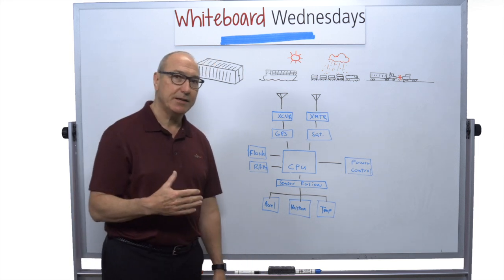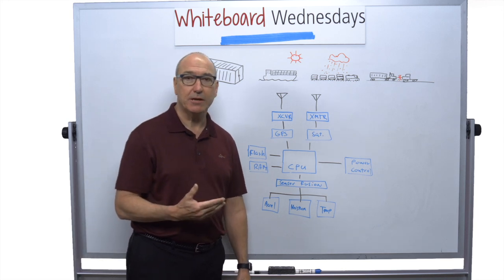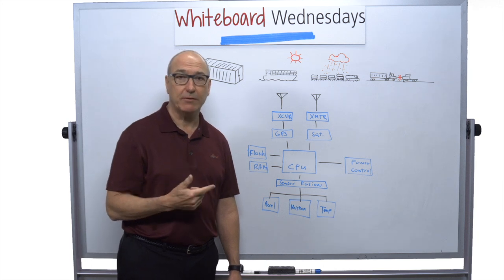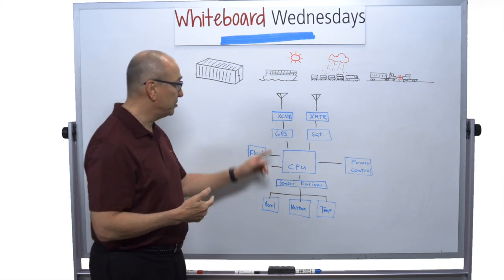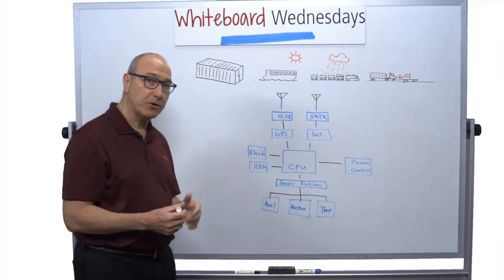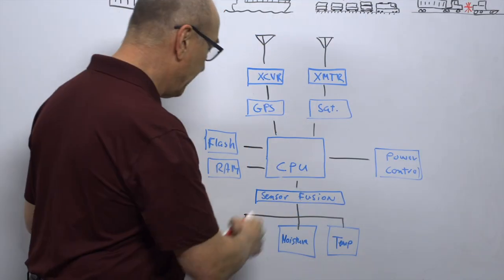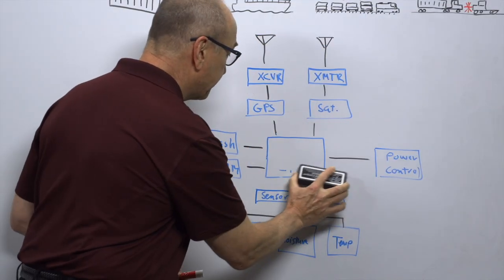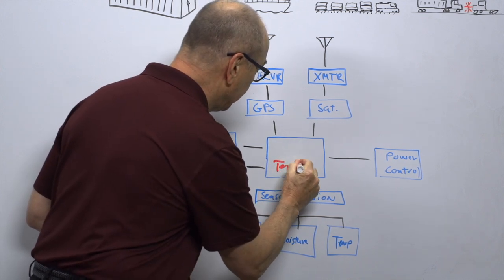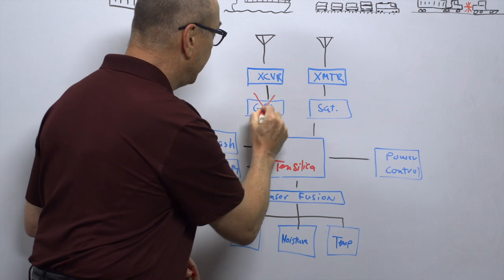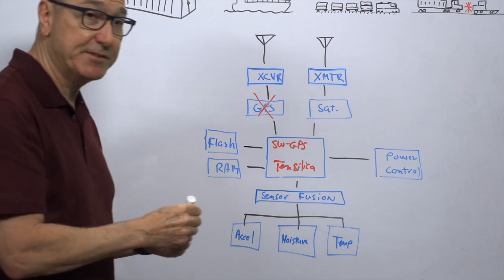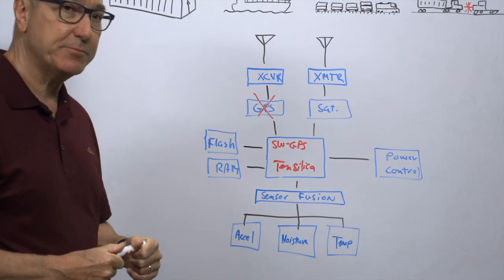And so that's where the idea of a software GPS comes in. So one of our partner companies called Galileo, they do just that. They write programs that are a software implementation of a GPS baseband processor. And they've announced one for our Tensilica line of processors. So what if we made this central CPU a Tensilica processor? And instead of having this block, we could run that in software, a software GPS program. So now we've saved this ASIC. It's going to save considerable expense.